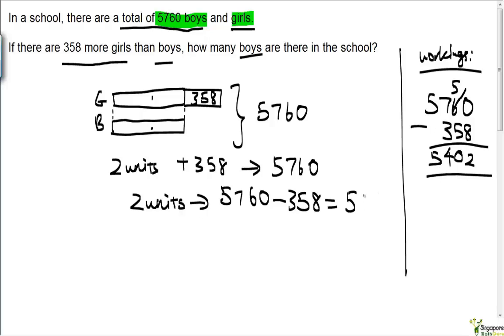So this is 5402. 5402 is the value of these two units here. One unit has to be equal to 5402 divided by 2.